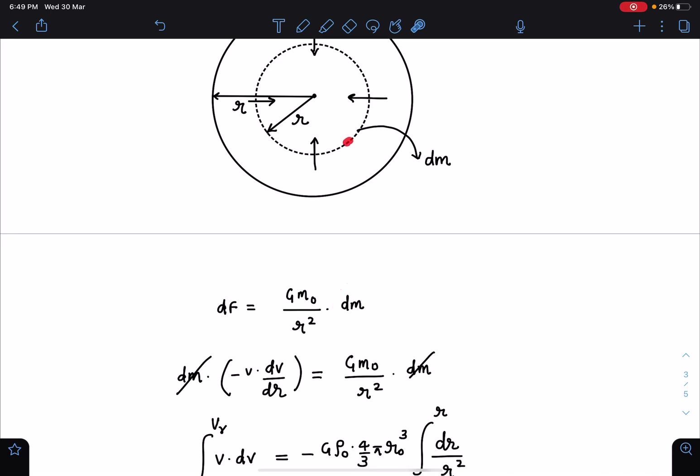dm is the mass of one particle lying in this layer. Time of collapse will be the time in which this particle will move from the outermost layer to the center. This dm cancels and I can write this becomes acceleration minus v dv/dr and this is GM0/r².